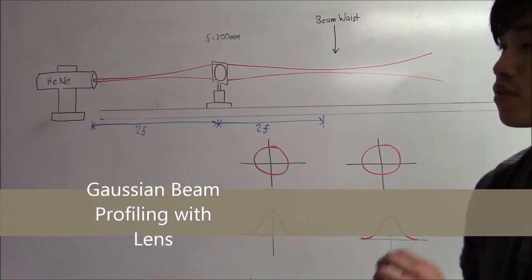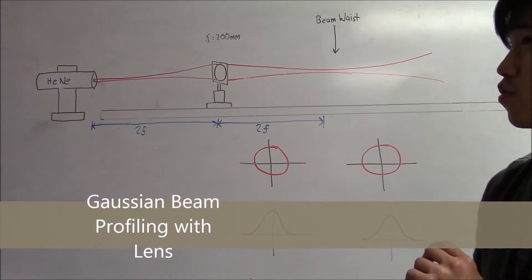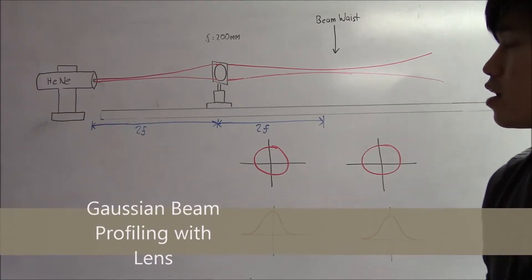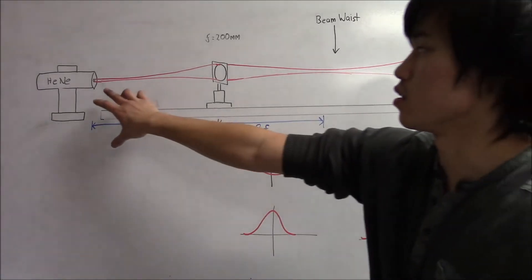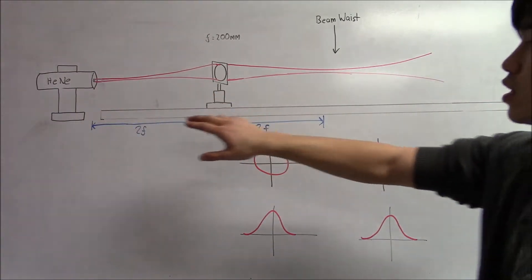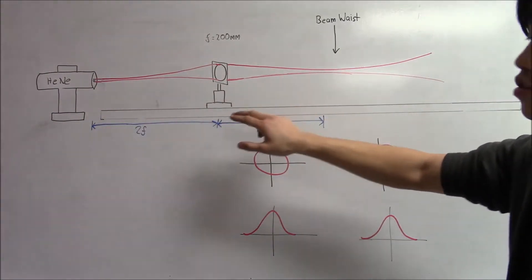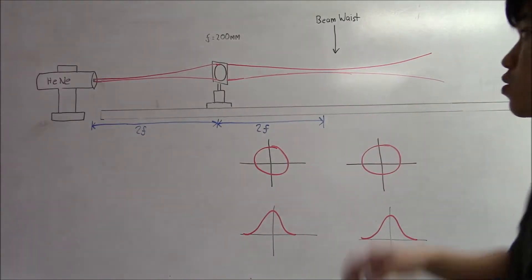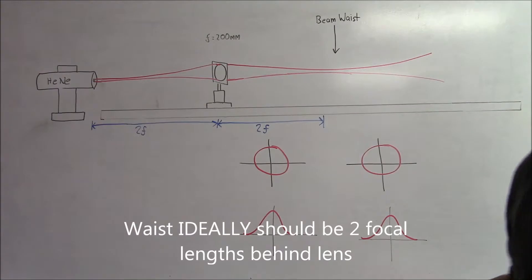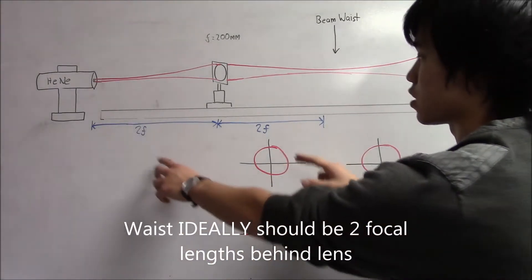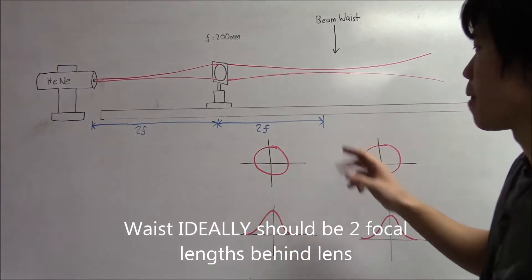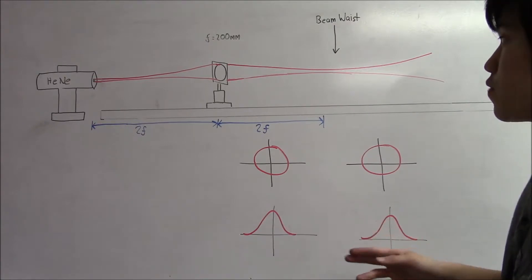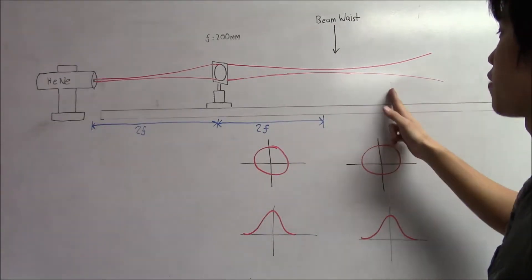In this section, we found the Gaussian beam profile using the lens. Using the lens will allow us to image the laser beam from the laser. We take the divergent Gaussian beam through the lens, and that will create a new divergent or converging and then diverging Gaussian laser beam. So we're able to see the waist. And because we set the system up in a 2F2F system, we can find the idealized waist position and take a beam profile measurement before the waist and after the waist.